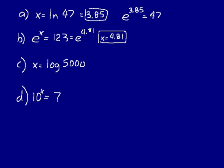In practice problem C, X equals log of 5,000. Do the base 10 log — when you see LOG like that, it just means base 10 logarithm; LN means the natural or base E logarithm. Your calculator only does base 10 and base E logarithms, which are the two most commonly used. So log of 5,000 on your calculator equals about 3.70.